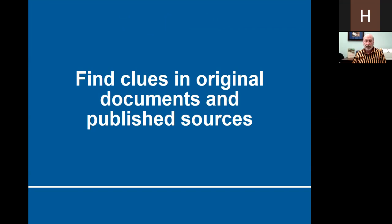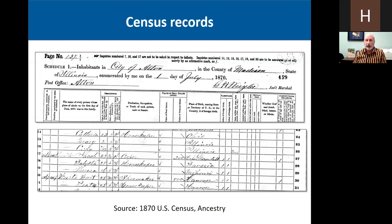Once you've exhausted everything you have around the house, talked to your relatives, and collected and organized that material, you'll want to start finding clues in original documents and published sources. Of course, census records. You need to do your U.S. research, and census records can sometimes give you clues to the place of origin. Census records are the backbone of U.S. research, so that's the first thing you should look at.